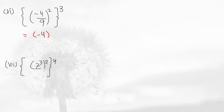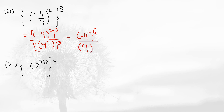Again, the law of power of quotient applies. Distribute the outer power: (-4) to the power 2, then to the power 3, gives (-4) to the power 6. And 9 squared, to the power 3, gives 9 to the power 6. That is your answer. Question 7 also uses power of power: z to the power 3 times 2 is 6, and 6 times 4 is 24. So z to the power 24 is the answer.